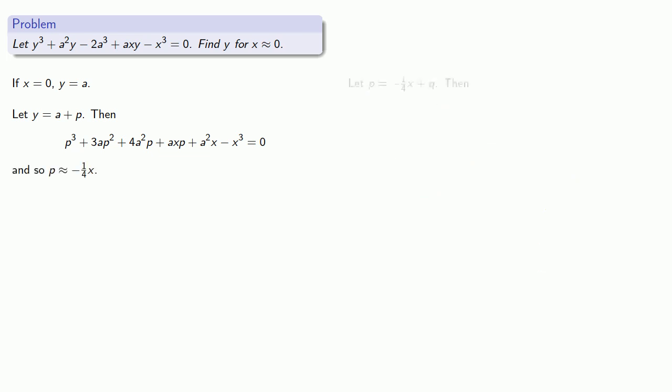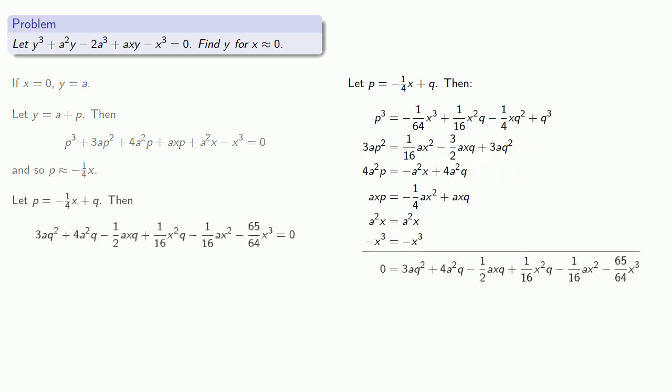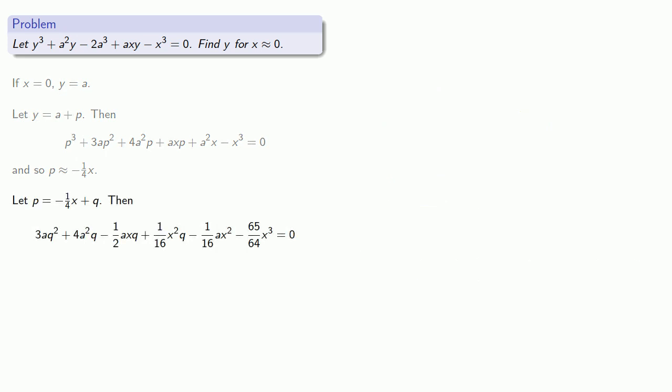Again, let p equal negative 1 fourth x plus q. Substituting in to our equation, we get a new equation in q and x. Now, remember our goal is to find y as a series in powers of x. And since we are letting p equal minus 1 fourth x plus q, then we'll treat q as an x squared term.